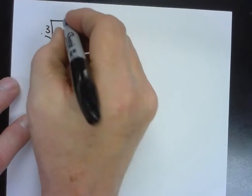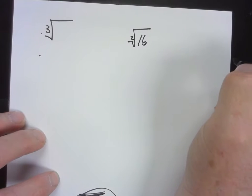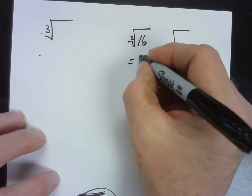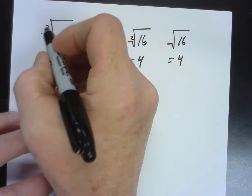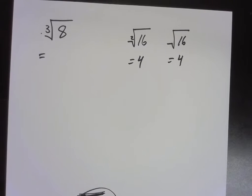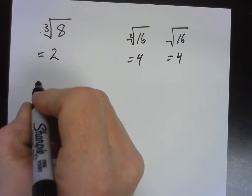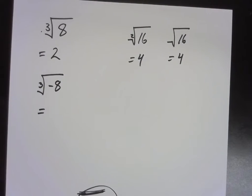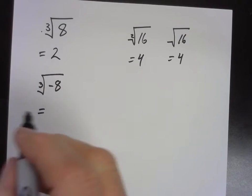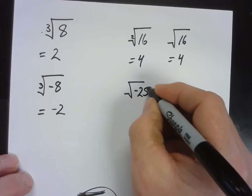The cube root symbol has a small 3 — technically the square root has a 2 but we're too lazy to write it. Cube root asks: what number times itself three times gives us 8? The answer is 2. This one doesn't say 'positive number' because the cube root of negative 8 is negative 2. I would never ask you the square root of a negative number like √(−25).